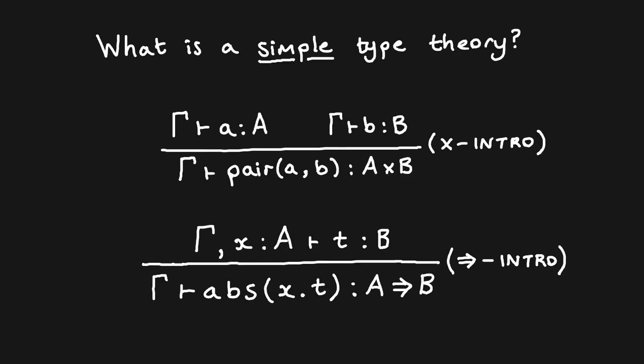What is a simple type theory? Here we have two natural deduction rules which are epitomic of the structure of simple type theories. On the top we have the introduction rule for product types, and on the bottom we have the introduction rule for function types. The first thing to note is that the types of a simple type theory have algebraic structure — we can combine types, for instance, by taking their product or function space.